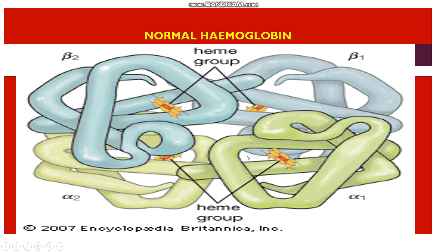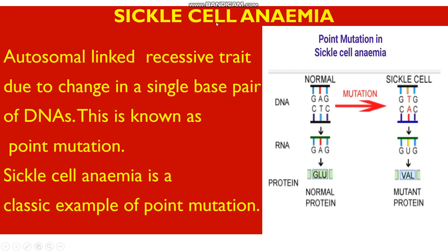In sickle cell anemia, the hemoglobin B gene (HBB gene) undergoes a specific mutation, resulting in a defective hemoglobin. As a result, the red blood cells become sickle-shaped and get destroyed easily, causing anemia. The mutated gene is located on the autosomes and not on the sex chromosomes, and the gene is recessive — it can be expressed only in the homozygous condition. So sickle cell anemia is an autosomal recessive trait.